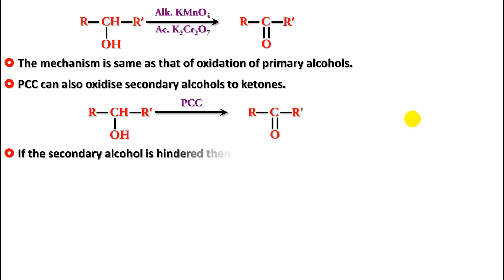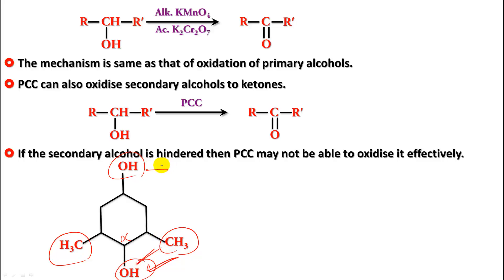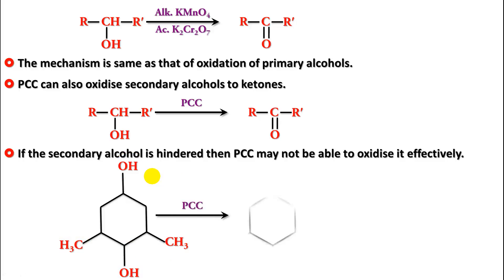If the secondary alcohol is sterically hindered, PCC may not oxidize it effectively. For example, consider a compound with two secondary alcohol groups: one secondary alcohol has two methyl groups adjacent to the alpha carbon, making it hindered, while the other is relatively unhindered. If we use PCC here, only the unhindered secondary alcohol gets oxidized to a ketone, while the hindered one remains as is. That is the oxidation of alcohols.